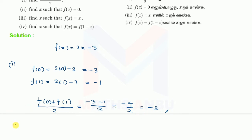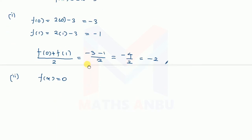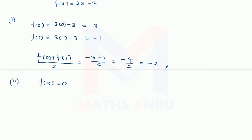The second question is: find x such that f of x is equal to 0. So f of x whose value is 0, we set f of x equal to 0. The value of f of x is 2x minus 3, so that value is 0, and we need to find x. So 2x minus 3 is equal to 0.